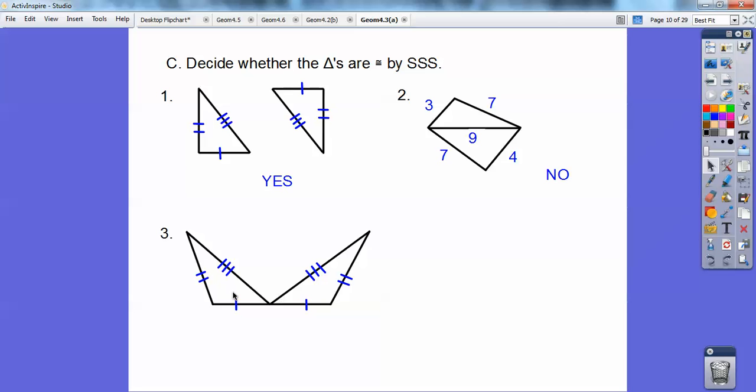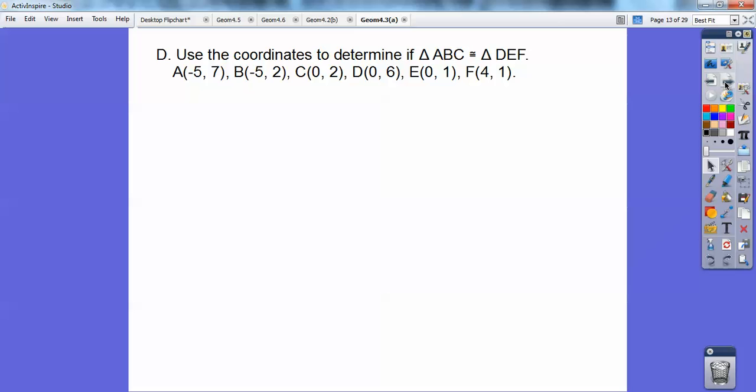How about that one? Is the lefty congruent to the righty? Yeah, it looks like all three sides are congruent, so that's a yes. How about that one? That one, you can say by the reflexive property, that middle one equals itself. So for both triangles, that would be yes. That's side-side-side also. Reflexive, you use a lot.